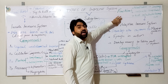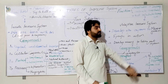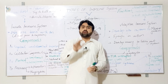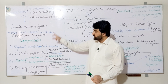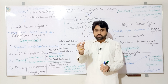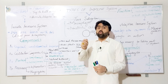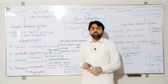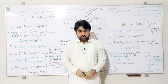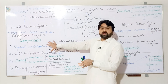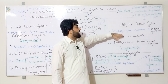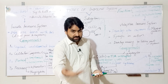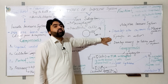Now, coming to adaptive immunity — adaptive immunity is developed after exposure to a microorganism. This means the effector molecules of adaptive immunity are not present at birth, unlike innate immunity. Effector molecules are those molecules through which the immune system exerts its effect on foreign invaders — such as physical and chemical barriers, cellular components, proteins, inflammation, and phagocytosis. In the case of adaptive immunity, these effector molecules develop after exposure to a foreign antigen or microorganism.